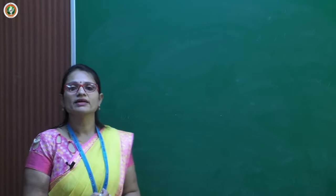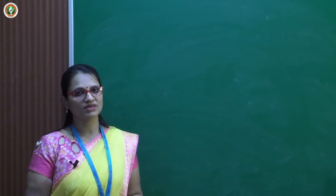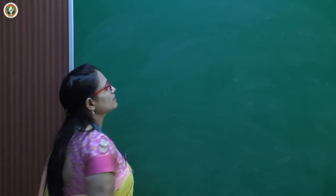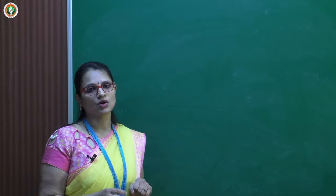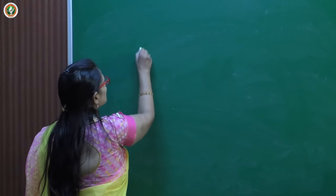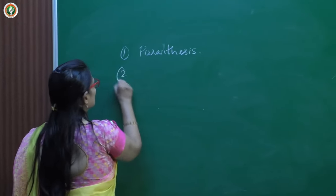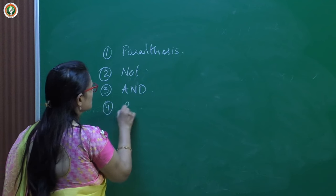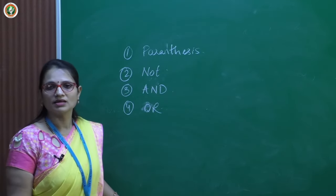When a Boolean expression contains multiple operators, operator precedence determines the evaluation order. The precedence is: first parentheses, second NOT, third AND, and fourth OR. We must evaluate the Boolean expression in this order.